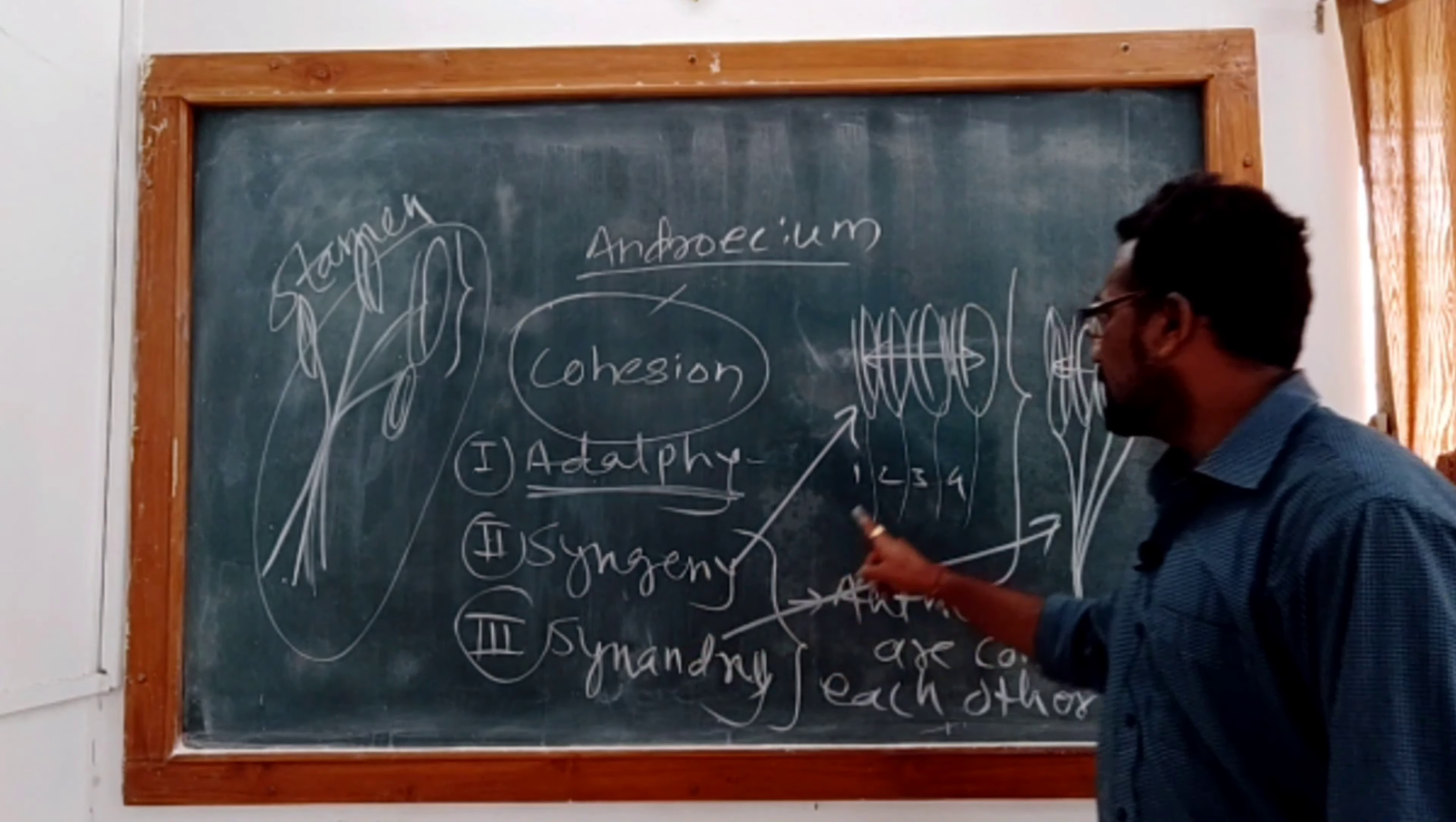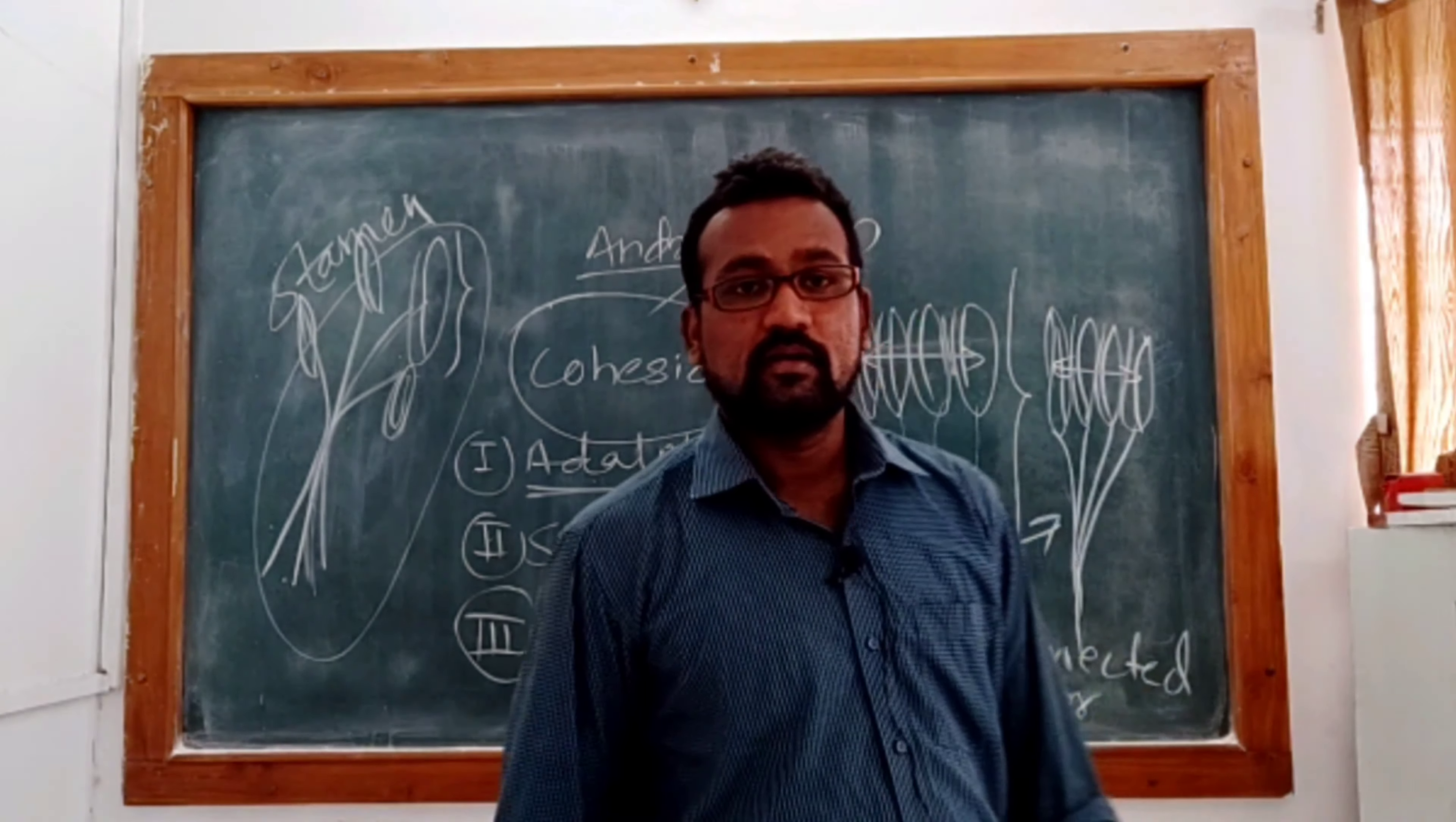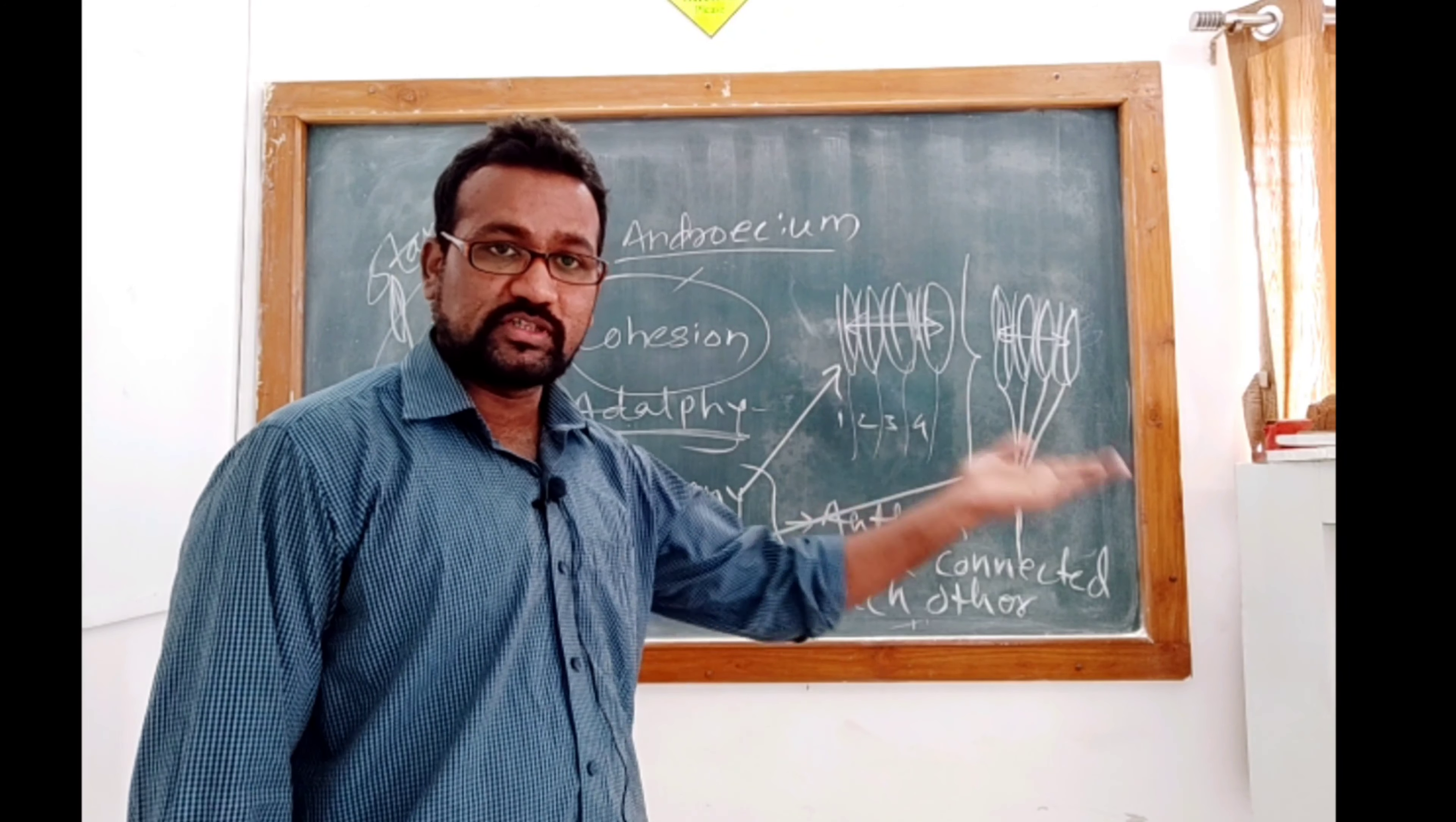In case of Syngeny, anthers are united, filaments are free - but opposite. And in Synandry, you will find both are connected to each other. Shall we proceed to another point?